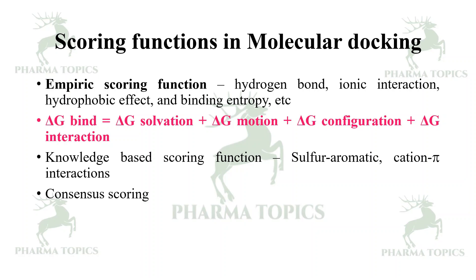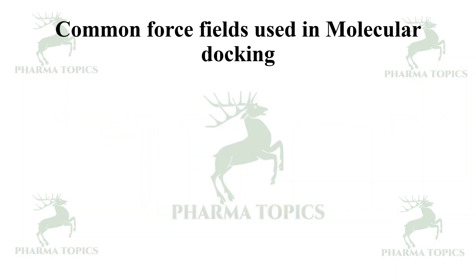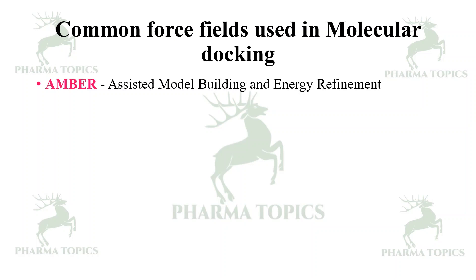Consensus scoring considers delta G_bind = delta G_solvent + delta G_configuration, and also accounts for rotational bonds — trans rotation, cis rotation, and vibrations. The common force fields used in molecular docking software include AMBER (Assisted Model Building and Energy Refinement), CHARMM (Chemistry at Harvard Molecular Mechanics), GROMOS (Groningen Molecular Simulation), MMFF (Merck Molecular Force Field), MM2, MM3, MM4, OPLS (used by Schrödinger Glide, Optimized Potential for Liquid Simulations), UFF (Universal Force Field), and PMF (Physics-based Molecular Field).